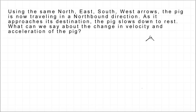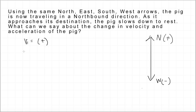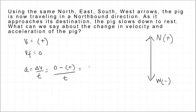From this question, we can see that the pig is traveling in a positive direction. This results in a positive initial velocity. Since it comes to a rest, the final velocity is zero. This means that the change in velocity is a negative number. Therefore, the acceleration will also be negative.